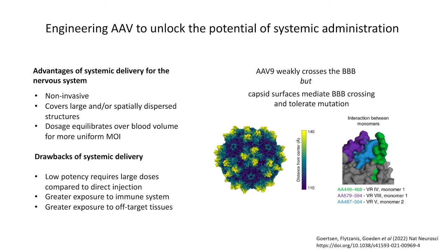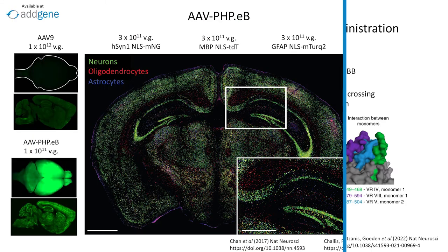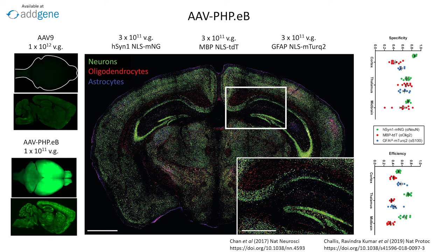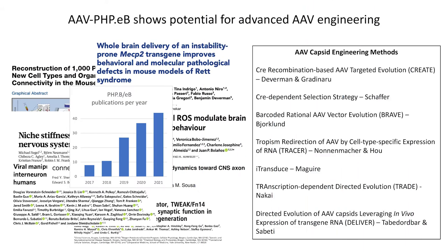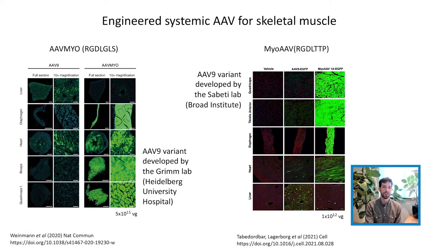Thankfully, the AAV capsid is also highly customizable, and it can be tweaked to significantly alter AAV behavior. This was most powerfully demonstrated by the engineered capsid AAVPHPEB, which efficiently crosses the blood-brain barrier in mice to broadly infect neurons and glia. PHPEB has become a staple tool of modern neuroscience and has inspired a host of new directed evolution AAV capsid engineering methods. Despite our focus on the nervous system, these methods have also been used to target AAV to other tissues, notably skeletal muscle, with the chemically-related AAV-myo and myo-AAV markedly outperforming natural serotypes after systemic delivery.